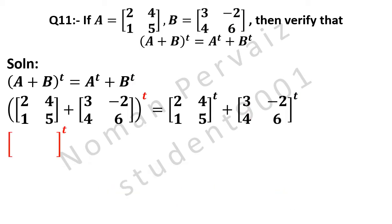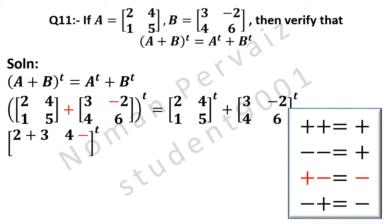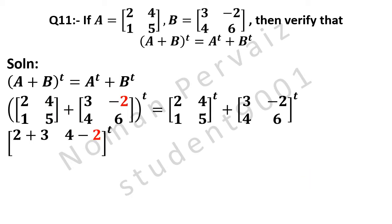Bracket with transpose is written. 2 comes from the first matrix plus 3 from the second matrix; 4 comes from the first matrix, plus minus 2 gives minus 2; 1 comes from the first matrix plus 4 from the second matrix; 5 comes from the first matrix plus 6 from the second matrix. Is equal to — next we will apply transpose.